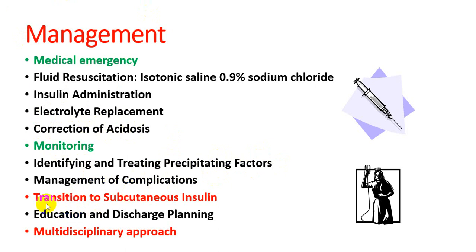We begin with IV insulin. Once the patient is stable and the anion gap is normal, we transition to subcutaneous insulin. Then patient education and discharge planning are conducted. This requires a multidisciplinary approach involving the endocrinologist, and other relevant specialists. This is the management of this disease.